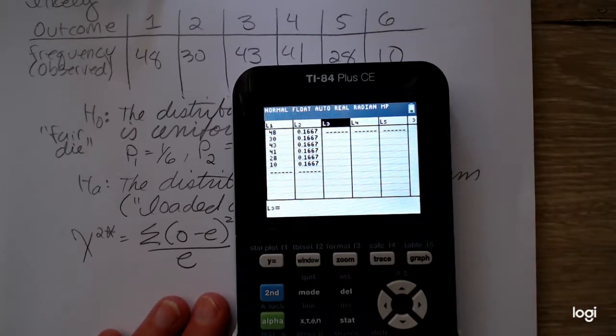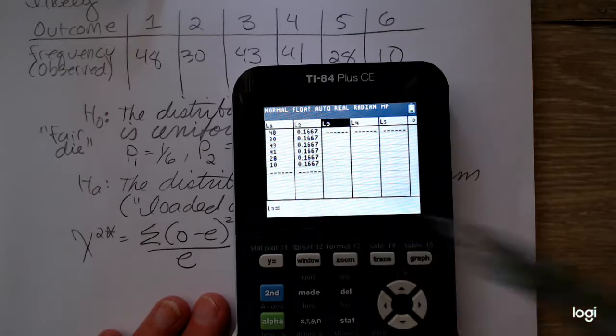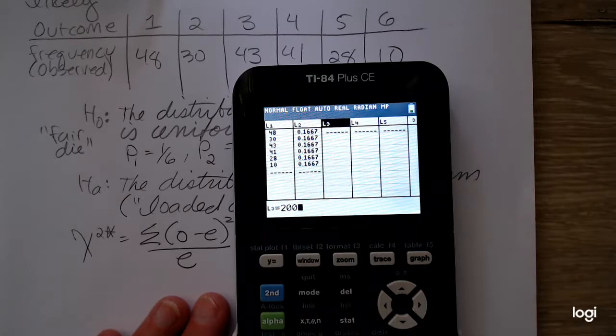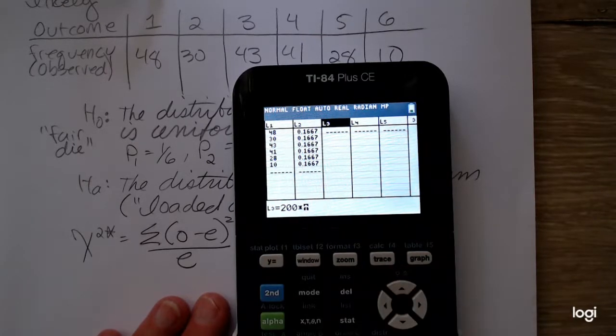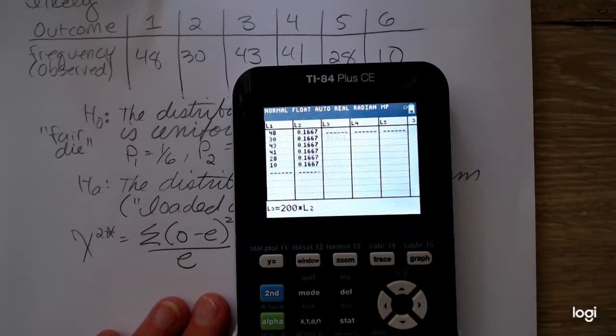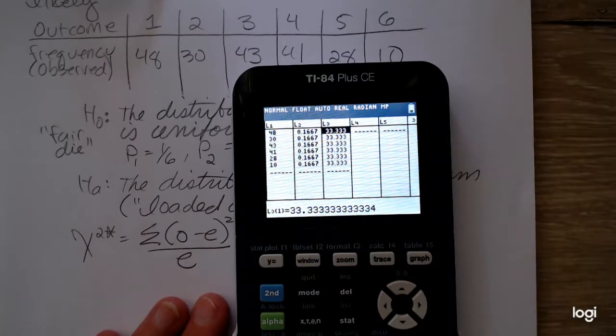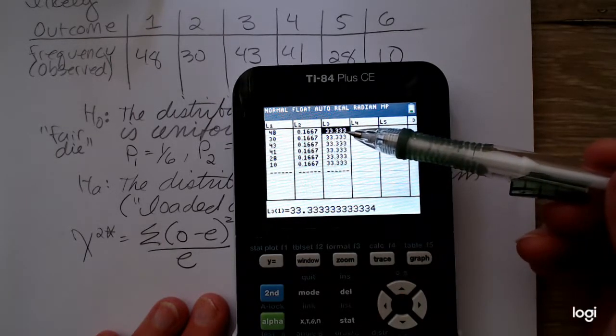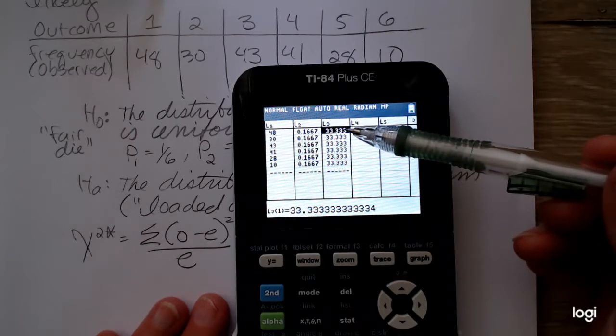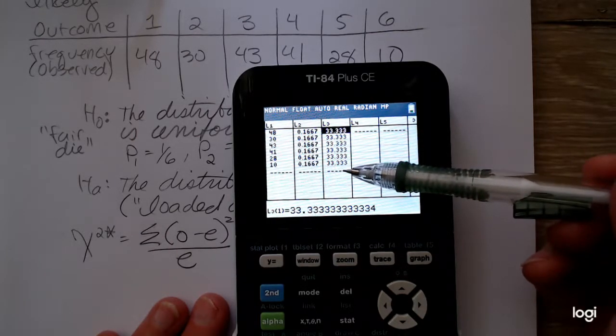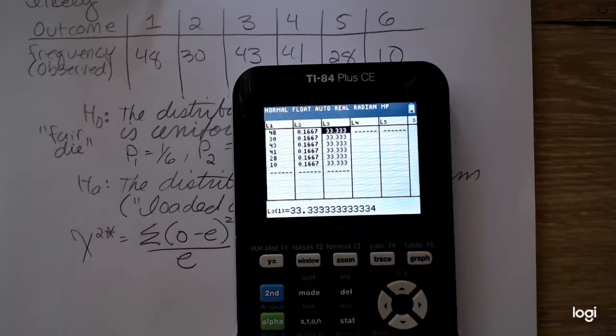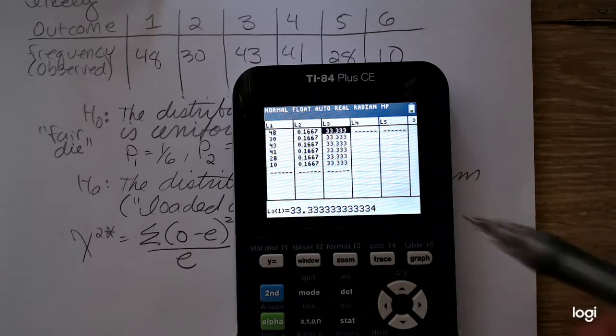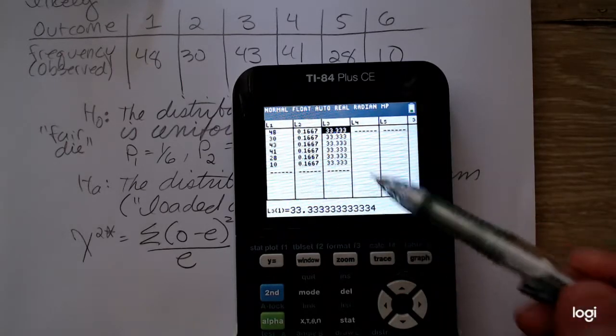So I can have the calculator do this quickly for me. If I move my cursor up to list 3, press enter, and then down at the bottom, I can tell the calculator to take 200 times the values in list 2. So you'll see that the expected counts are all the same, because we're expecting each outcome to be the same. Now I can run the goodness-of-fit off of this.